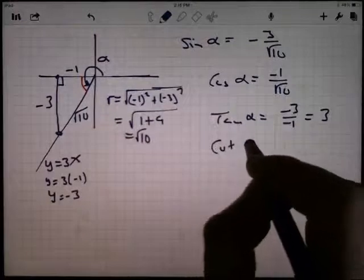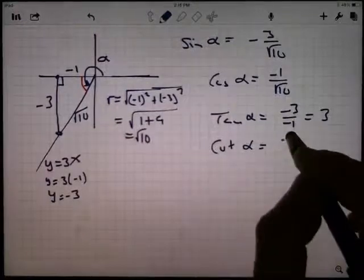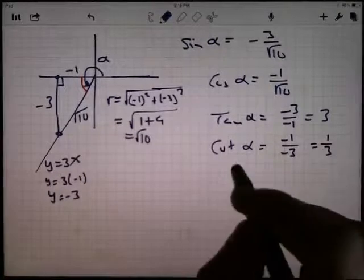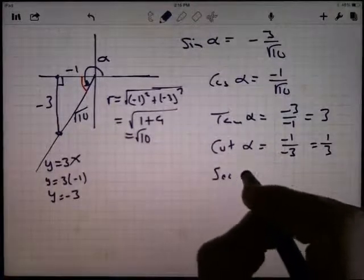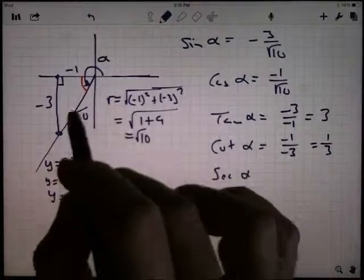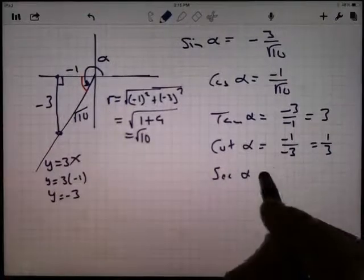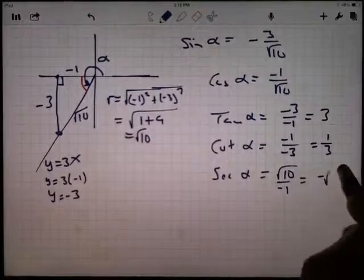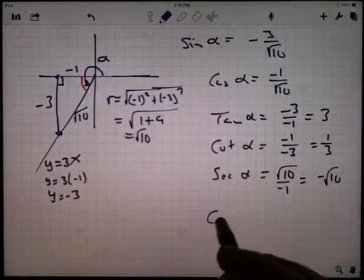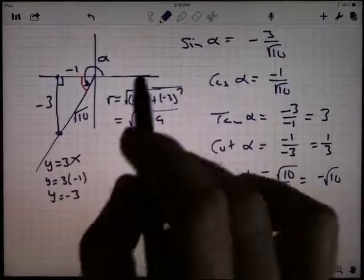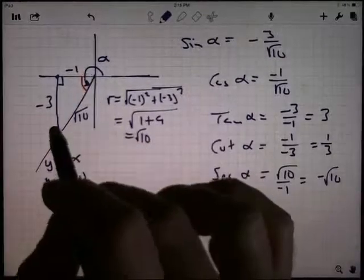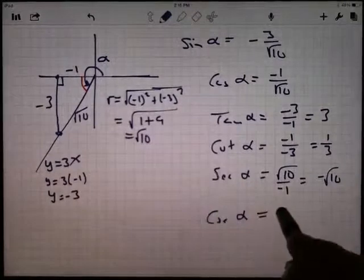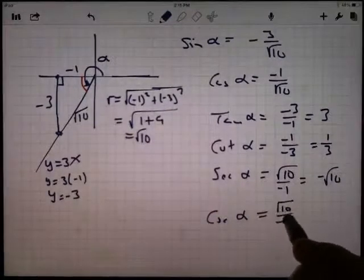Likewise, the cotangent is the reciprocal of the tangent: negative 1 over negative 3, which simplifies to 1 third. The secant is the reciprocal of the cosine: the square root of 10 over negative 1, which is just negative square root of 10. The cosecant is the reciprocal of the sine, so r over y: the square root of 10 over negative 3.